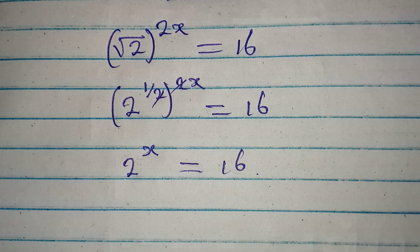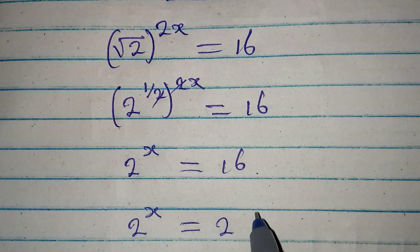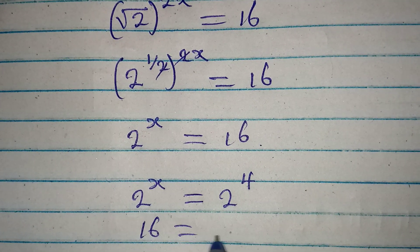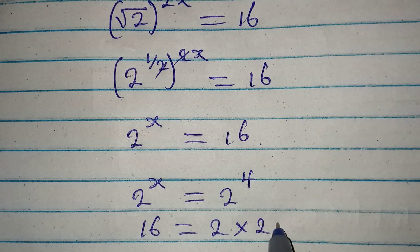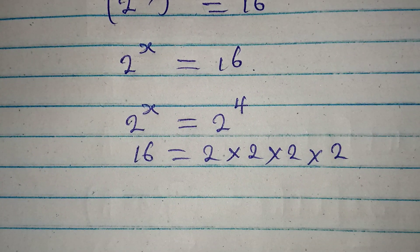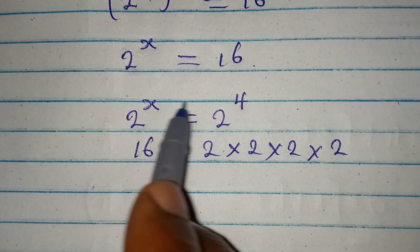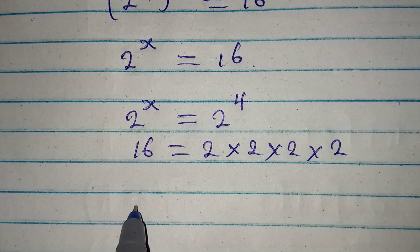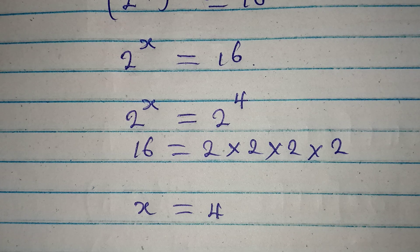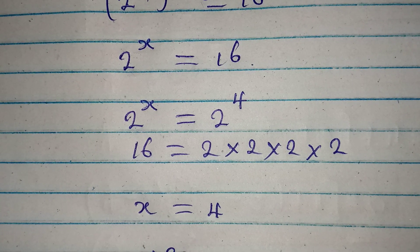Now that we have 2 as the base, we can express 16 with 2 as the base. So 2 to the power of x is equal to 2 to the power of 4, because 16 equals 2 times 2 times 2 times 2, which is 2 to the power of 4. Since the bases are the same, we can equate the powers, giving us x equal to 4.